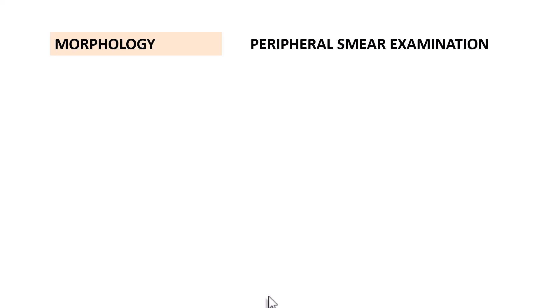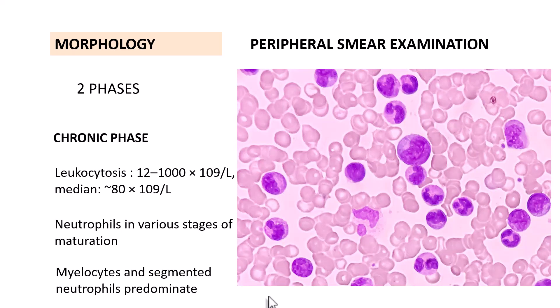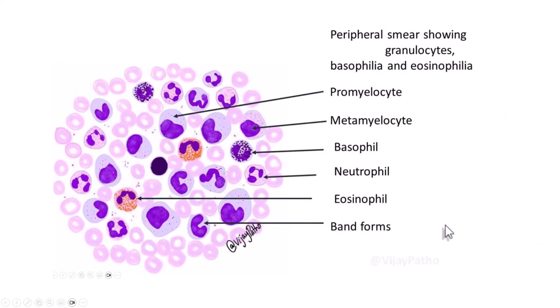How do you diagnose CML? What are the morphological features? On peripheral smear examination, the clinical phase of CML is divided into two phases: the chronic phase and the blast phase. The WHO has deleted the accelerated phase, so now there are only two phases. In the chronic phase, you see leukocytosis — usually around 80,000 to 1.2 lakhs per cubic mm — with neutrophils in various stages of maturation, predominantly myelocytes and segmented neutrophils, along with eosinophils and basophils.